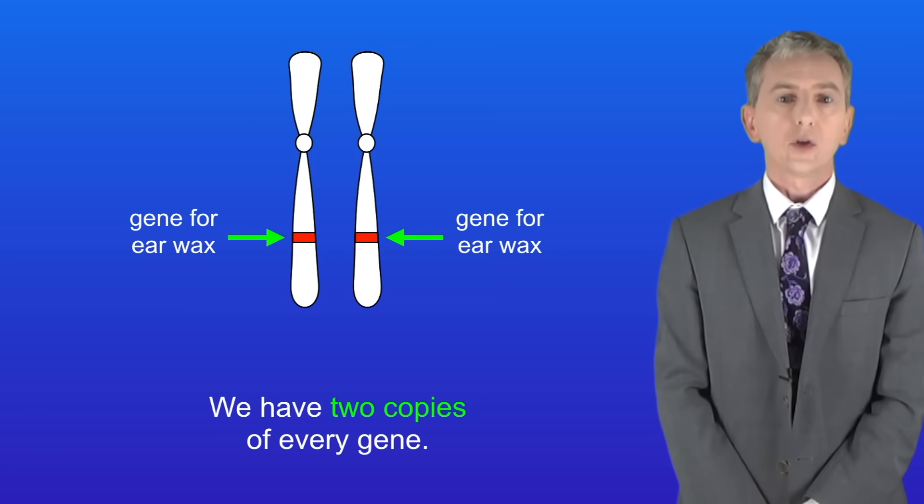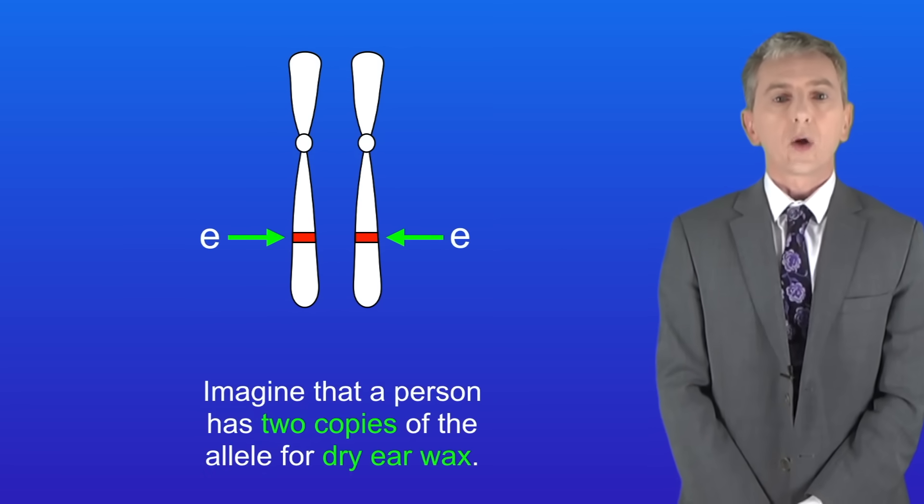As we said before, we've got two copies of every gene, so imagine that a person has two copies of the allele for dry earwax. I'm showing that here.